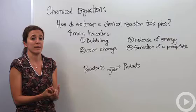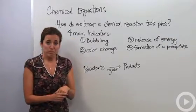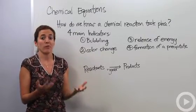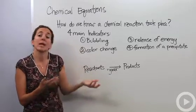There are four main indicators that a chemical reaction actually took place. Bubbling is one of them. So when you put two things together and bubbling starts to occur, that's a gas being formed. So in those bubbles is actually a gas, you're actually forming new gas particles.